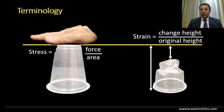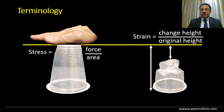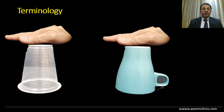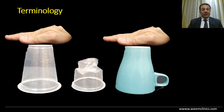Some basic terms that we have to understand before discussing the material properties: stress is the force per unit area that is applied to a certain material, and is measured in newtons per meter squared. This force will result in a deformation, a change in the height or shape of a material, and this is what we name a strain, measured in percentage — it's a ratio between the original and the change. Different materials respond in different ways to the force applied; some materials are elastic, so they deform a lot with low stresses applied.